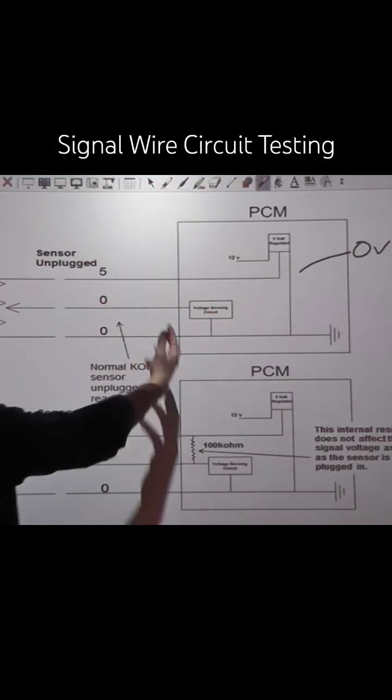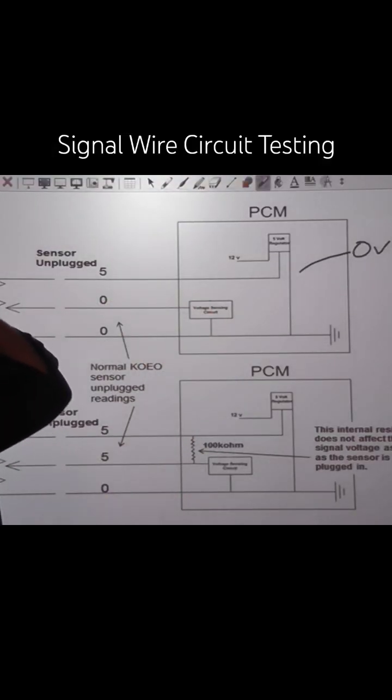So how do we verify the signal wire? I'm worried about opens and shorts. I'm worried about a bad sensor.